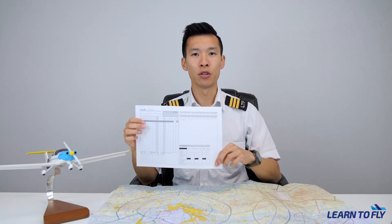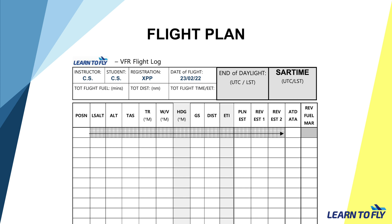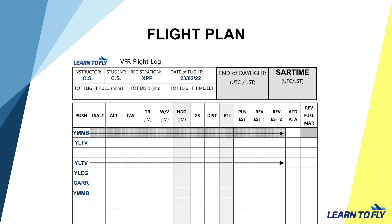While drawing the lines on the map, we can also start filling out the flight plan sheet. The first position is our departure point YMMB, the second waypoint is YLTV, the third waypoint is YLEG, the fourth waypoint is CERR — Karem — and the fifth point is back at Moorabbin. We will be conducting a full stop landing at Latrobe Valley, so we need to leave two lines below Latrobe Valley and rewrite it again to show that we are conducting a full stop landing. After completing drawing the lines on the map, it's now time to measure with the ruler and protractor the distance and bearings of each leg of our navigation exercise.